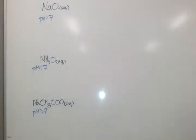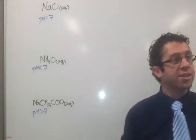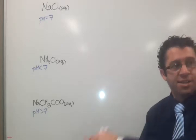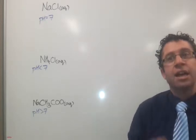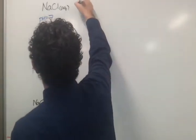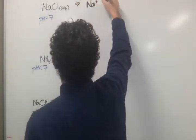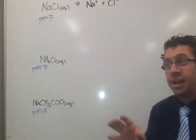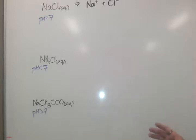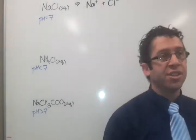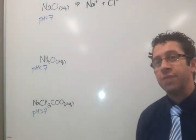The first thing you need to understand is what these little AQs mean. They mean dissolved in water. That means that there is no sodium chloride particle in a solution of sodium chloride. It is sodium ions and chloride ions. The fact that this is 7 tells us that neither of these go on to react with water, that's it.